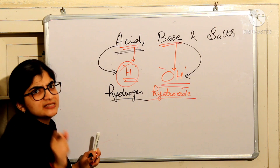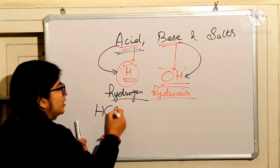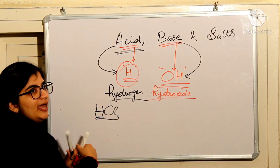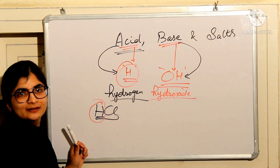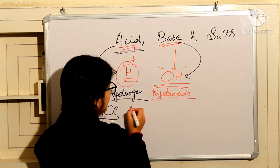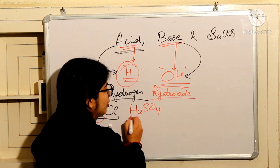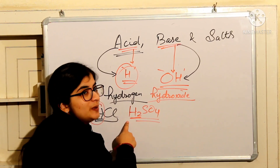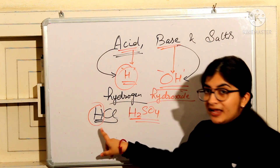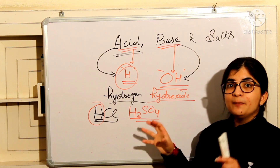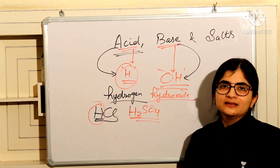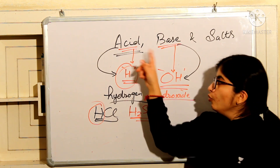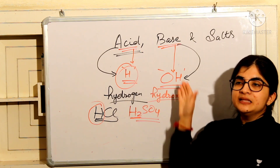Let's take an example. You must have seen in laboratories, bottles with HCl written on them. H is there — that is why: the presence of H indicates acid. Another example is H2SO4. You can see H2 — one H is present in HCl, and two H is present in H2SO4. This tells us there is acid inside. For base, we will see the presence of OH.